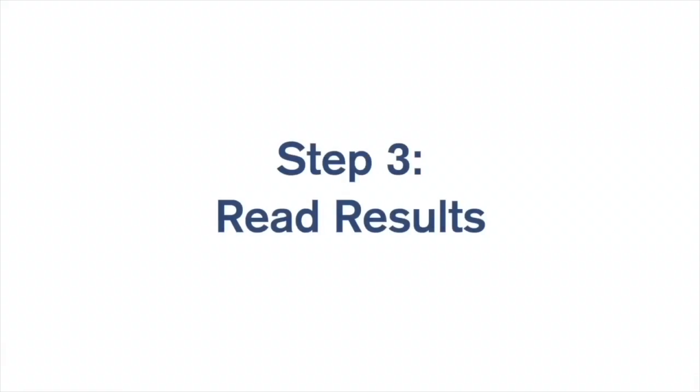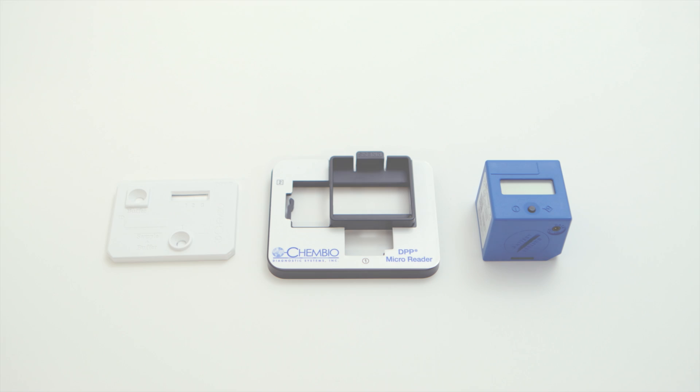Step 3: Read results. The ChemBio DPP HIV syphilis test must be read using the ChemBio DPP microreader. Do not attempt to interpret results visually.